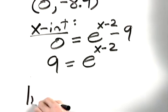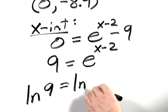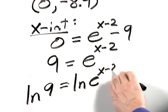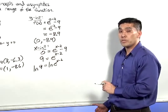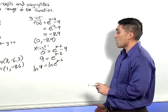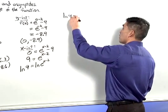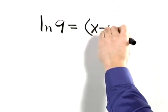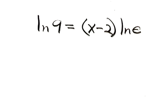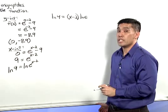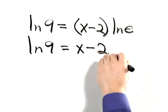The natural log of the left-hand side becomes natural log of 9, and on the right side is the natural log of e to the x minus 2 power. On the right-hand side, we need to apply one of the properties of logs. So we end up with the natural log of 9 equals the quantity x minus 2 times the natural log of e. But recall the natural log of e is just 1, so the natural log of 9 equals x minus 2.